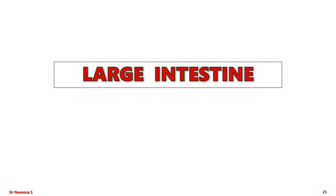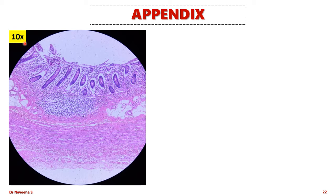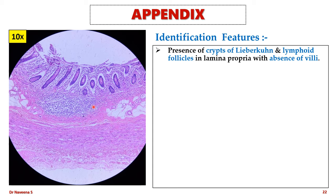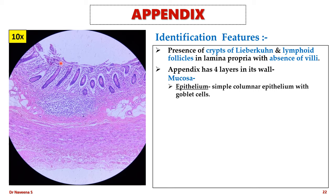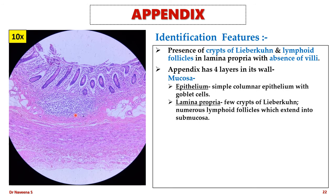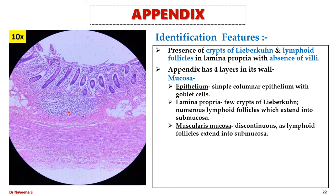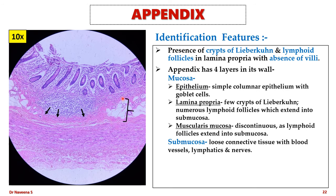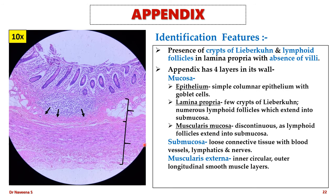Let's see the slides of large intestine. Appendix — here is the slide seen under low magnification. It is identified by the presence of crypts of Lieberkühn and lymphoid follicles in the lamina propria, with absence of mucosal villi. Mucosa is lined by simple columnar epithelium with goblet cells, which invaginates into the lamina propria to form short and few crypts of Lieberkühn. Lamina propria also contains numerous lymphoid follicles which extend into the submucosa by penetrating through the muscularis mucosa, making it a discontinuous layer — one of the key identification features for appendix. Submucosa is formed by loose connective tissue, blood vessels, lymphatics, and nerves. Muscularis externa is formed by inner circular and outer longitudinal smooth muscle layers. Serosa is formed by the peritoneal layer lined by simple squamous epithelium.